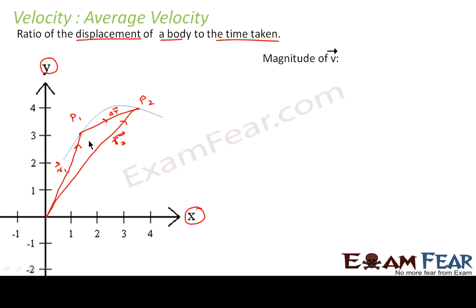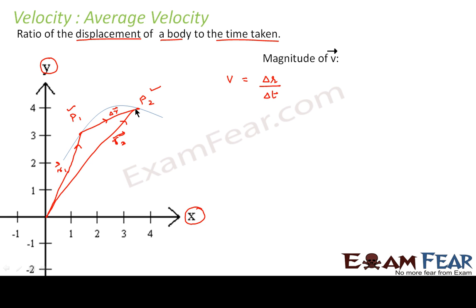Now how about the average velocity? As we already know, whenever we talk of average velocity we talk of the velocity between two points — between any two instances of time. So if I ask you what is the average velocity between p1 and p2, we know that average velocity is nothing but the total displacement of the particle divided by the total time taken. It is denoted by delta r by delta t, where delta r is the total displacement occurring in time delta t.